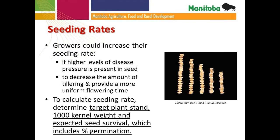In terms of seeding rates: if there is higher disease pressure present on the seed, producers could increase their seeding rate to try to compensate. An added benefit of increasing your seeding rate is that it might decrease tillering and provide more uniform flowering time, which makes fungicide application timing a little easier. When determining seeding rates, use a target plant stand, thousand kernel weight, percent germination, and expected seed survival percentage. You may need to bump that up if you're using seed that has disease present that could impact stand establishment.